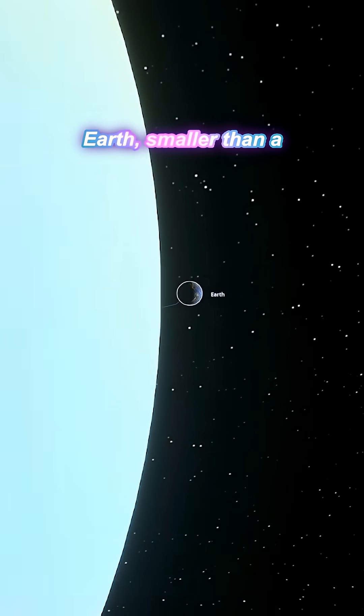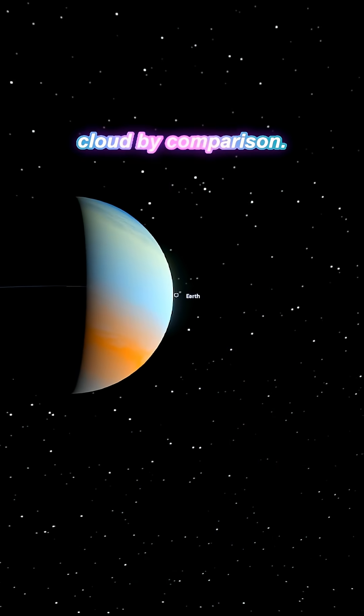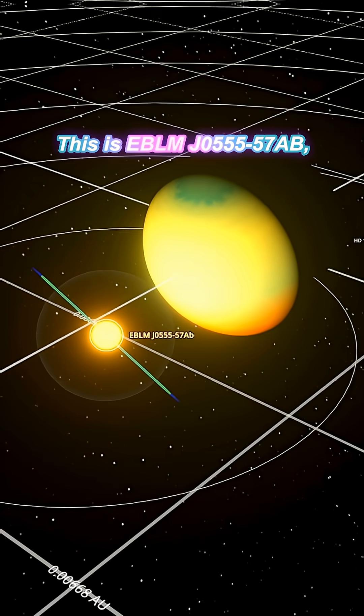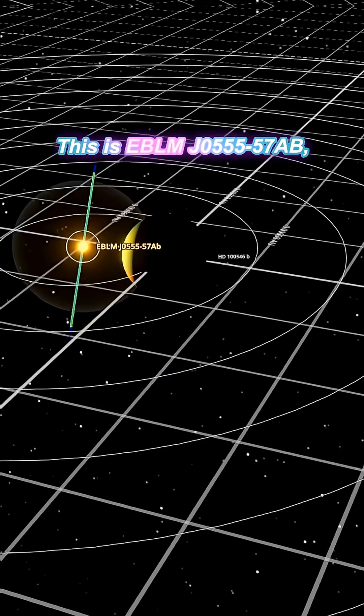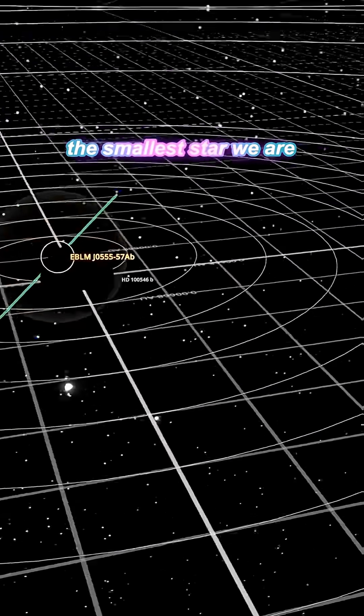Here it is, right next to Earth, smaller than a cloud by comparison. This is EBLM J0555-57AB, the smallest star we are aware of.